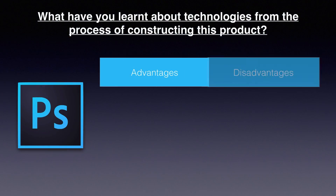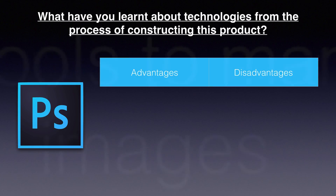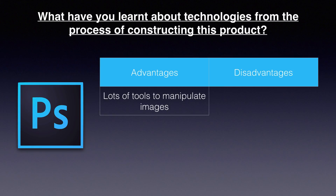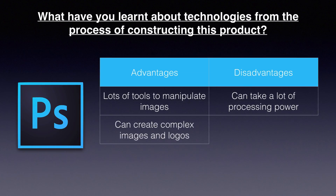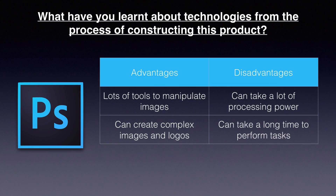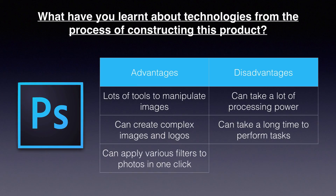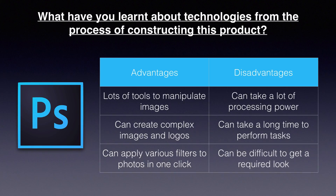Advantages and disadvantages of Photoshop: One advantage is that there are lots of tools to manipulate images, but a disadvantage is that it can take a lot of processing power. Another advantage is that it can create complex images and logos, but a disadvantage is that it can take a long time to perform tasks. Another advantage is that it can apply various filters to photos in one click, but a disadvantage is that it can be difficult to get the required look.